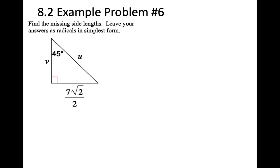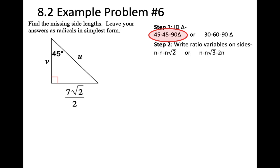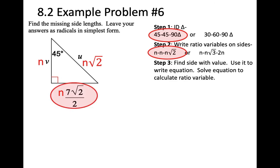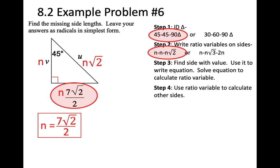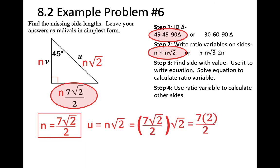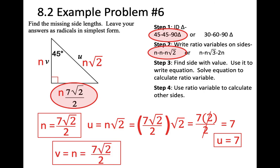Problem 6: Step 1, it's a 45-45-90 triangle. Step 2, put on ratios N, N, N root 2. Step 3, find the side with a value and write the equation — here N equals 7 root 2 over 2, nothing to solve. Step 4: U equals N root 2, which is (7 root 2 over 2) times root 2. Root 2 times root 2 is 2, so the 2s cancel and U equals 7. V equals N, which is 7 root 2 over 2.